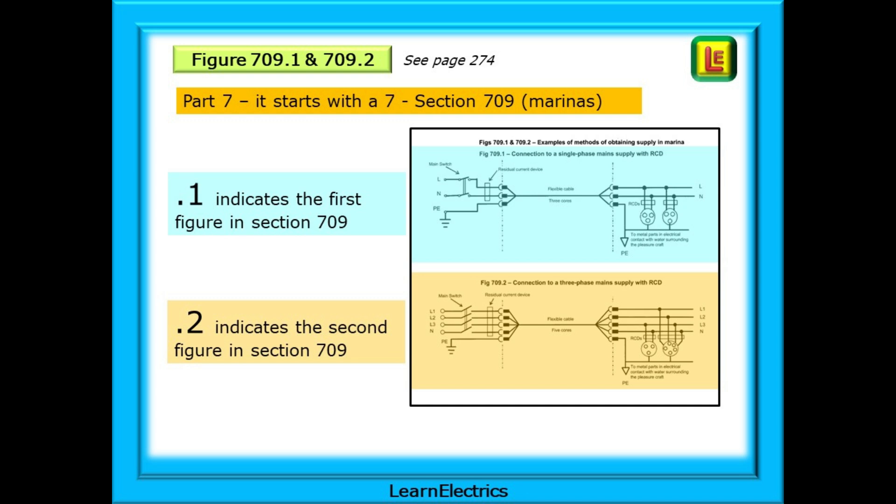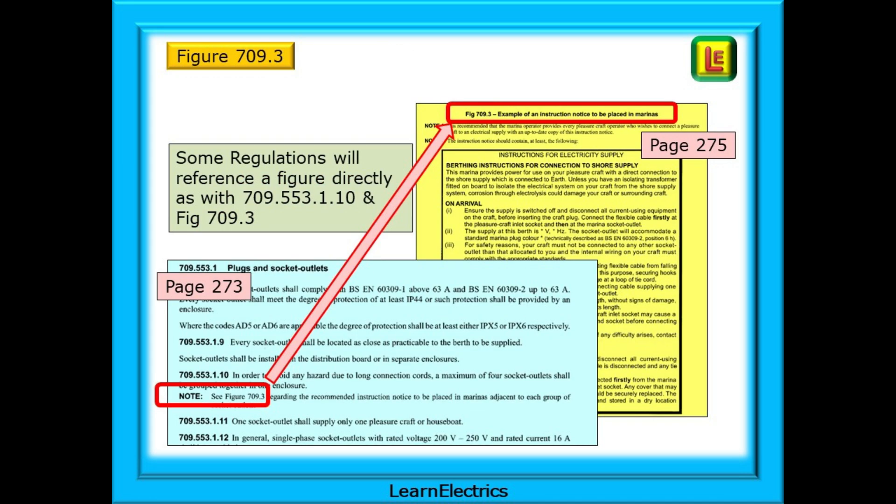And 709 tells us that it is in section 709 for marinas. .1 indicates the first figure on the page, shown here in blue. And .2 is for the second figure, shown in a beige colour. Some of the wiring regulations will reference a figure directly, as with regulation 709.553.1.10 on page 273.